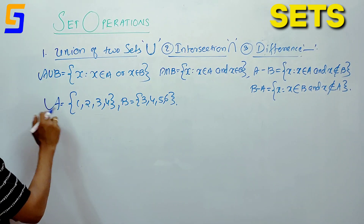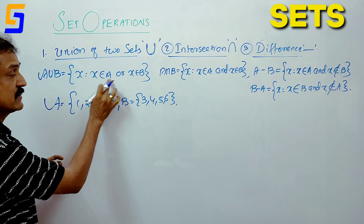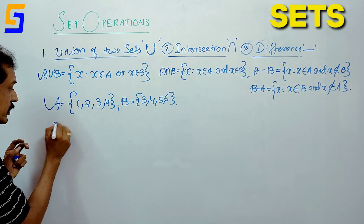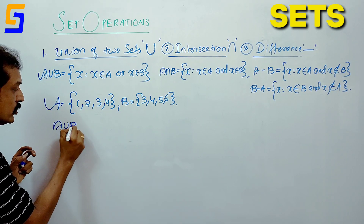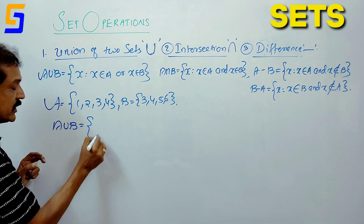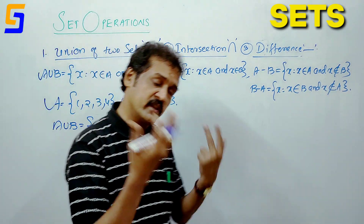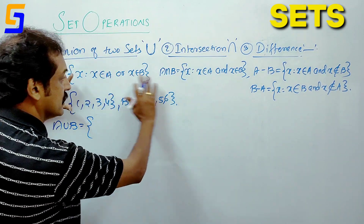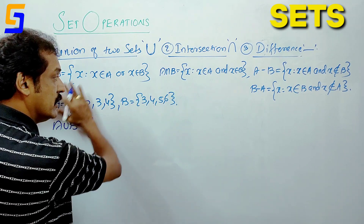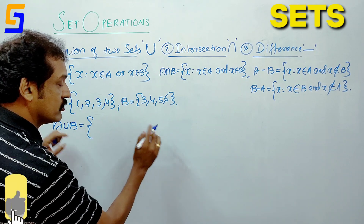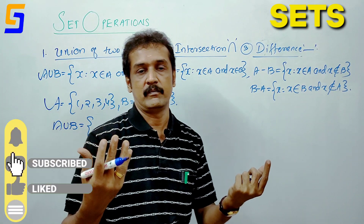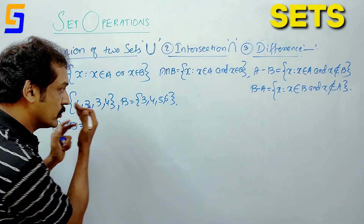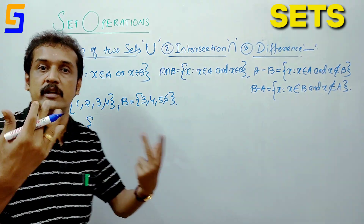A union B is the set of X where X element of A. In these two sets, all members are combined into one set.